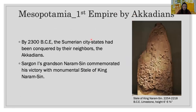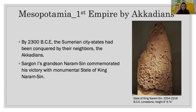By 2300 BCE the Sumerian city-states had been conquered by their neighbors to the north, the Akkadians, under ruler Sargon I, who established the region's first empire. Sargon's grandson Naram-Sin commemorated his victory over the Lulubi people of eastern Mesopotamia with the monumental Stele of King Naram-Sin. It pictures the Akkadian king dressed in god-like regalia, striding confidently over defeated soldiers.